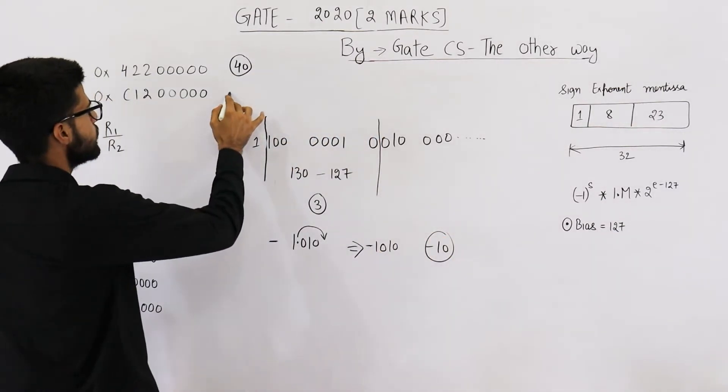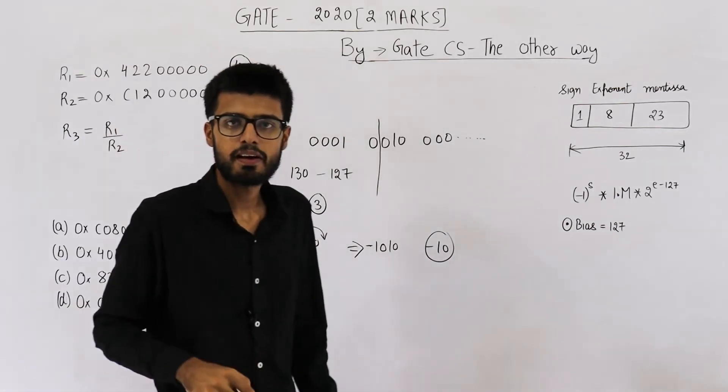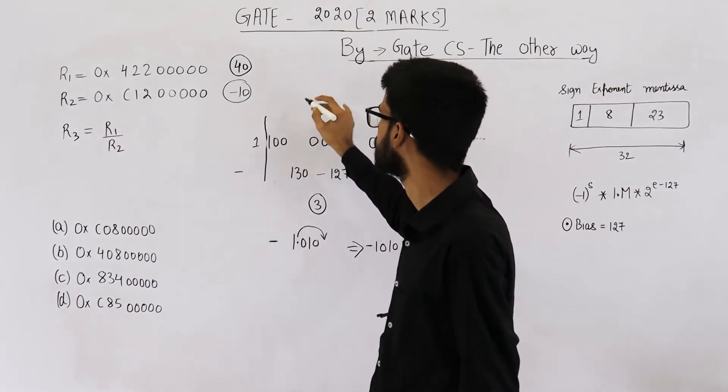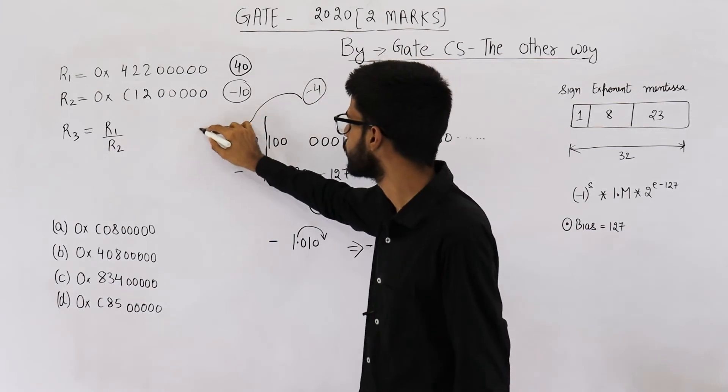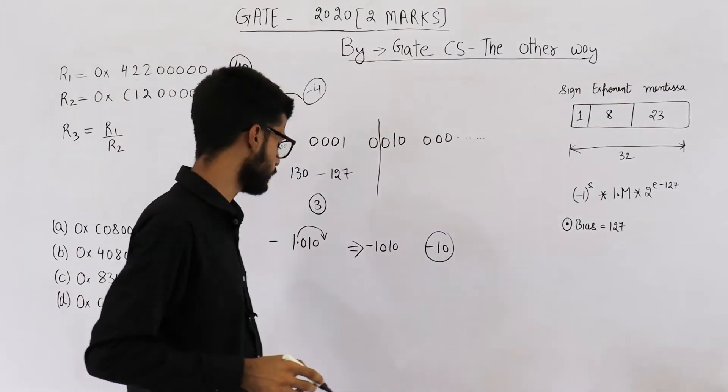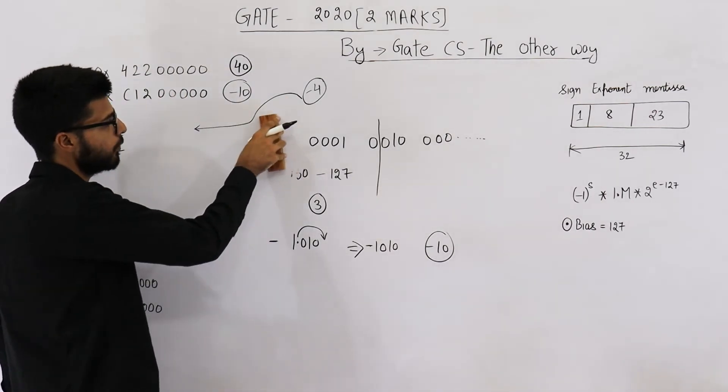So this is minus 10, and now we are dividing value of R1 by value of R2. 40 upon minus 10 is minus 4. This minus 4 is saved in R3. Now let us see how is minus 4 represented in single precision IEEE format.